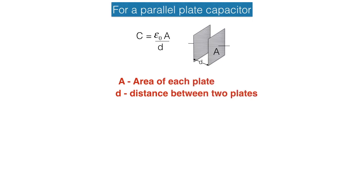The equation on which we will work is C equals epsilon zero A by d. Obviously A stands for area of each plate and d shows the distance between two plates.